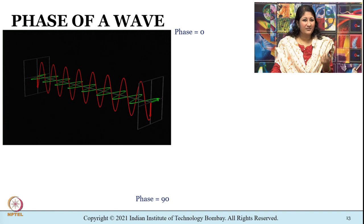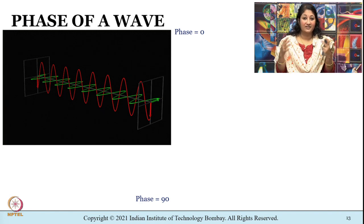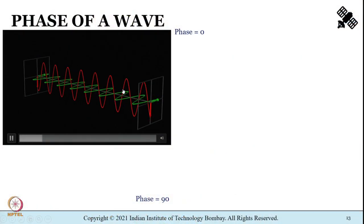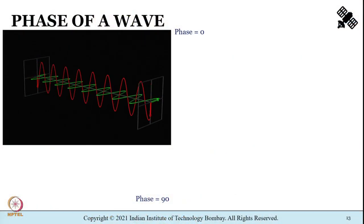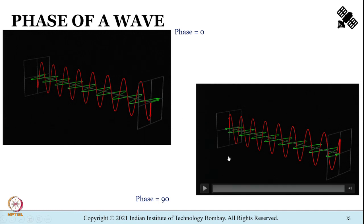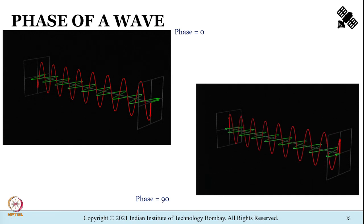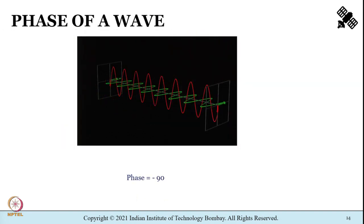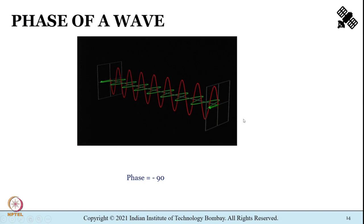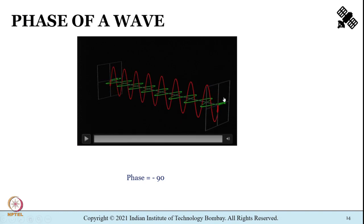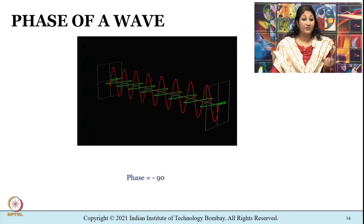With this background, let us understand what is phase of a wave. Waves can be at different initial stages of their oscillation cycle — they can have different initial phase, denoted by phi. If we have a wave with a phase of 0, it looks like a standard sine wave. Waves with a phase of 90 degrees and waves with a phase of minus 90 degrees look different, as shown here.